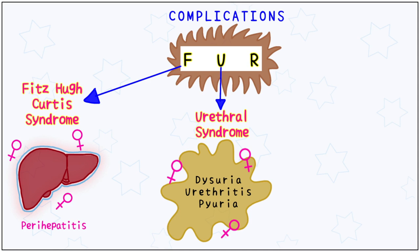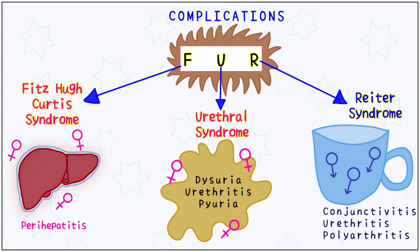R is for Reiter's syndrome, which is characterized by conjunctivitis, urethritis, and polyarthritis. Easy to remember by the mnemonic CUP, and it affects only males.